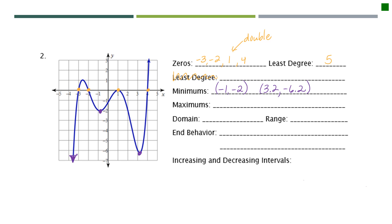For the maximums, I have two. I don't have an absolute maximum because this graph goes up forever as you follow it to the right. So I have two local or relative maximums. The first one is at about (−2.5, 1), and the second one — which also happens to be the double root — is at (1, 0).